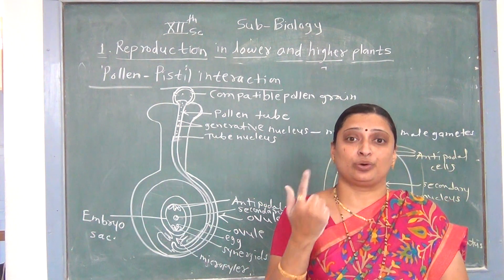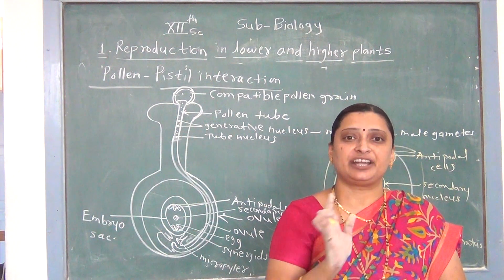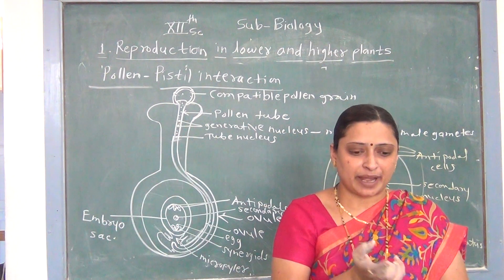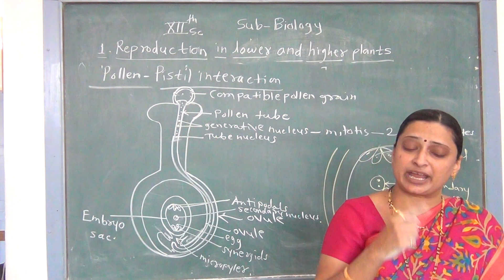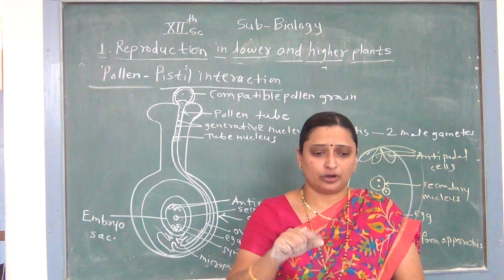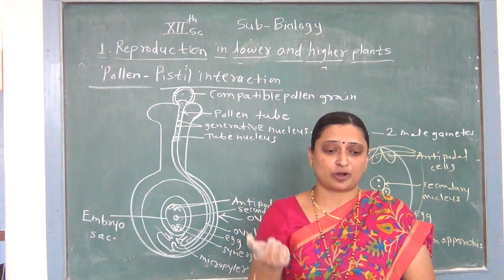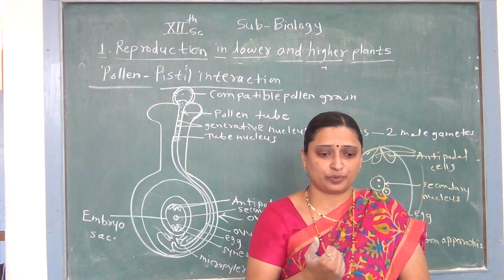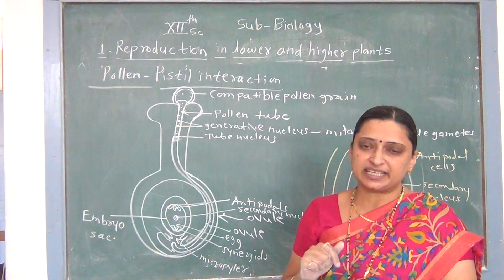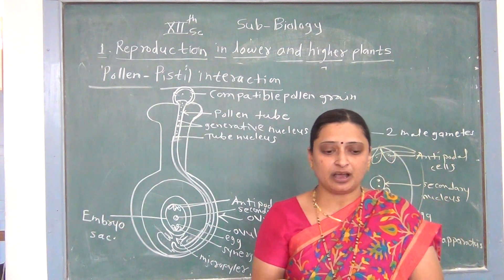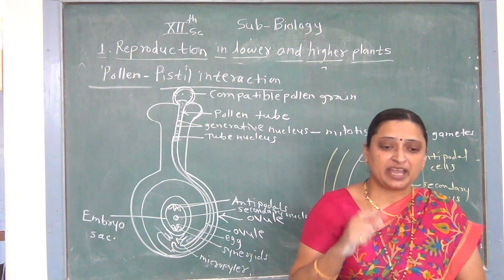Pollen can also be germinated artificially by using a sucrose solution. We can use sucrose solution to germinate pollen grain so that the pollen tube comes out from one of the germ pores. Additionally, the addition of boric acid facilitates pollen germination.